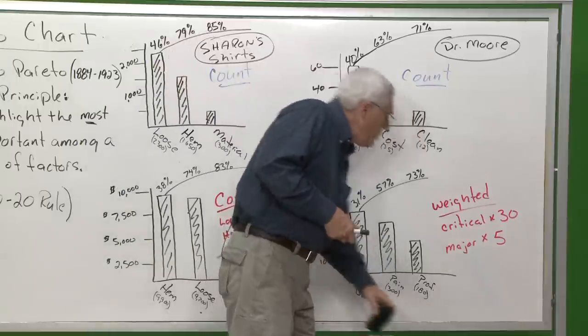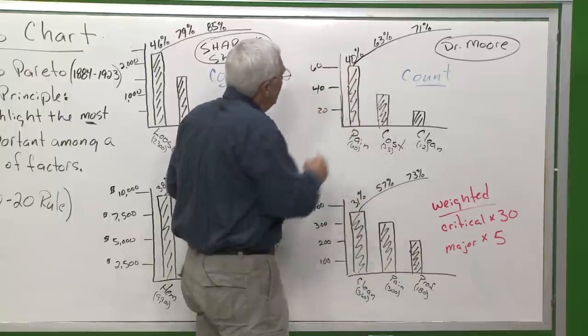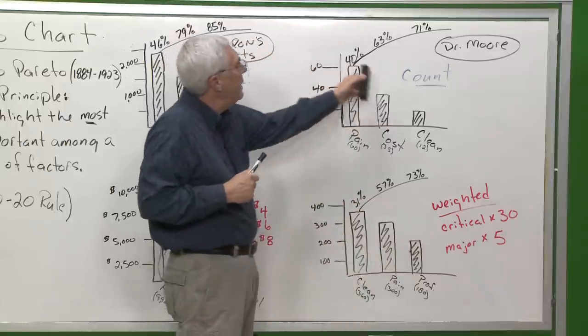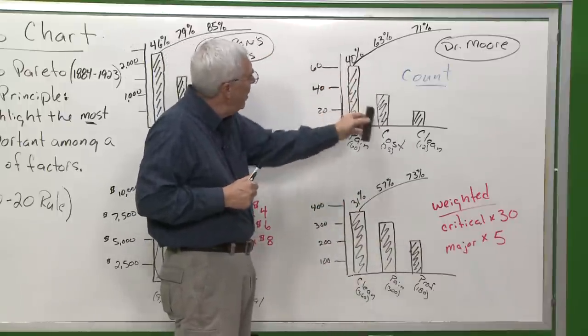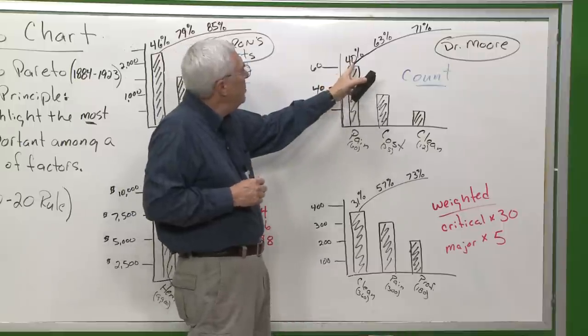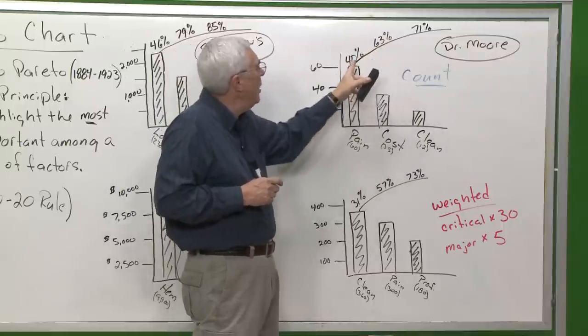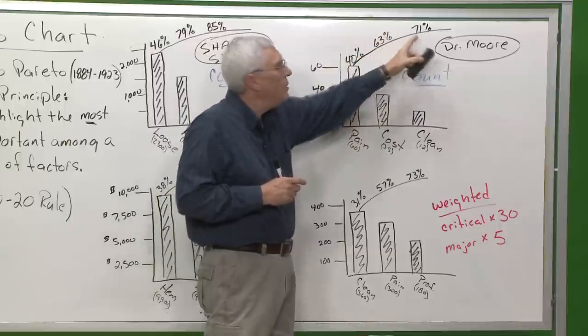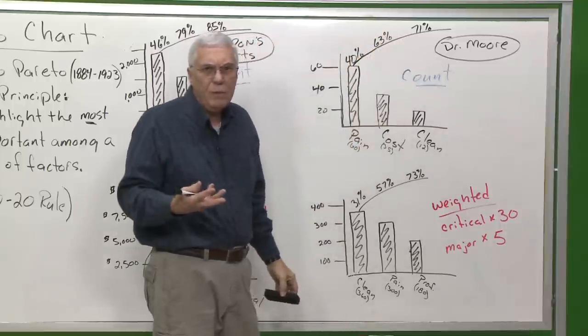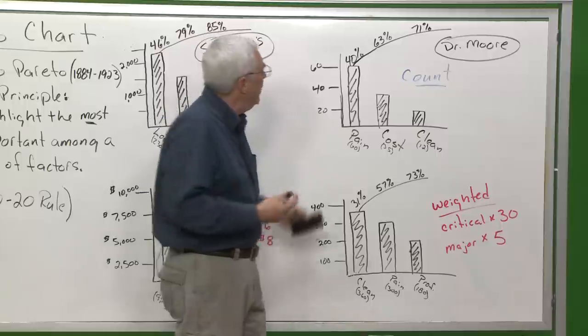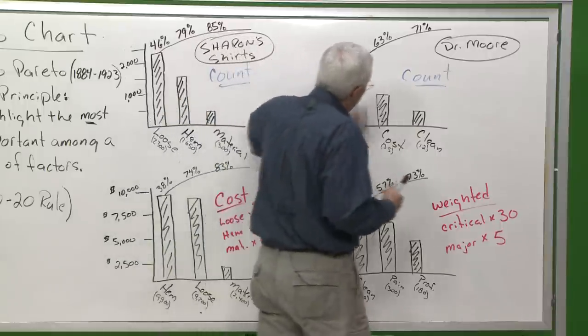I have one other thing I want to show you real quickly, because sometimes you'll see these charts a little differently. This is the way I like to see them. I like to see them with the bars, and then I like to see the numbers, the Pareto line coming out of the top bar, and the percentages shown on the Pareto line. It makes it a lot easier for me to read, and I think it's a better chart. There is another way you're going to see these.